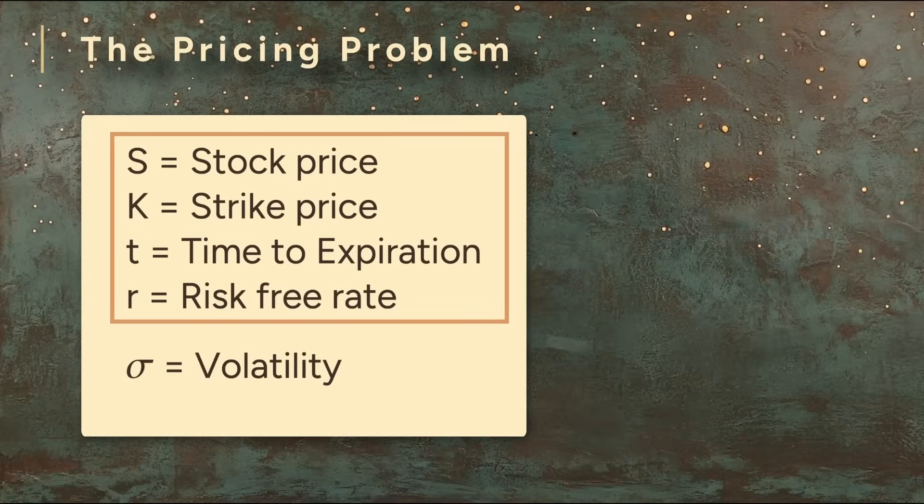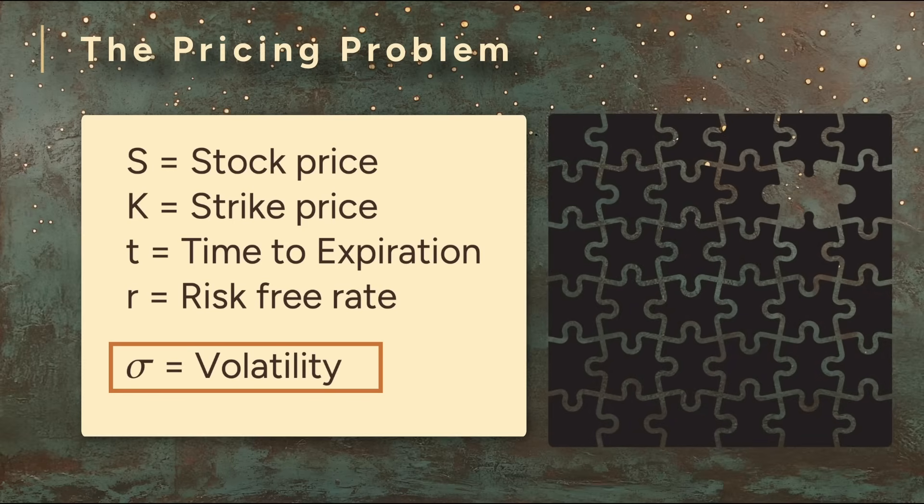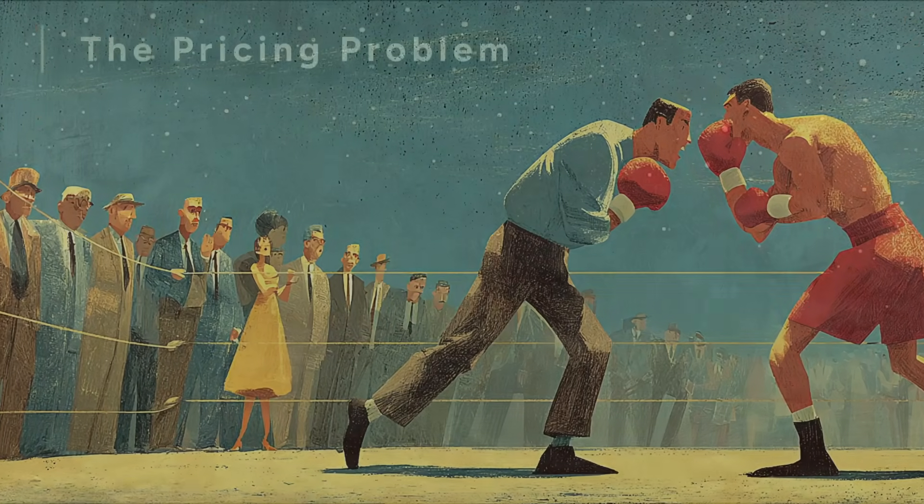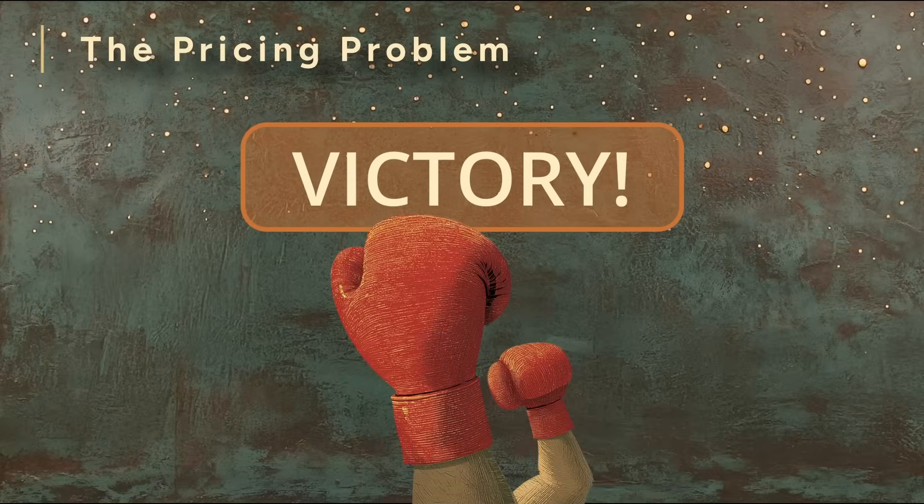The first four are straightforward. You can look them up. Volatility is different. It is, once again, the missing piece. It cannot be observed directly. And because it must be estimated, it's the source of disagreement. It can also be the source of opportunity.